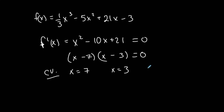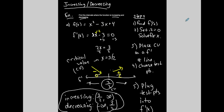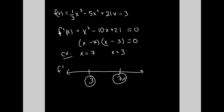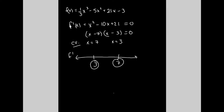Place the critical values on an f prime number line, always least to greatest — 3 and 7 go on the bottom. These are the values that will go into your increasing and decreasing intervals. Pick test points: less than 3, choose 0; between 3 and 7, choose 4; greater than 7, choose 8. Plug them into the first derivative.